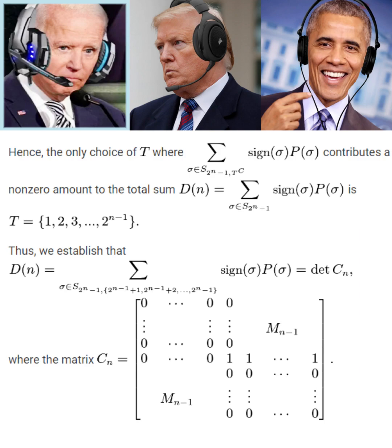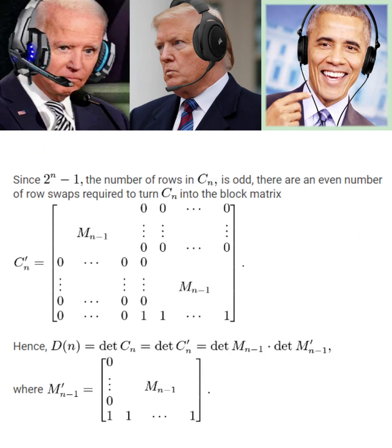Alright, the next step is that we can establish that D of N is just the determinant of this matrix C sub N. So this is what we're aiming to find. Observe that since C sub N has an odd number of rows, an even number of row swaps are required to turn C sub N into this matrix, C prime sub N. Hence, the determinant we're trying to find is just the determinant of C prime sub N, which is composed of these two matrices, M sub N minus 1 and M prime sub N minus 1.